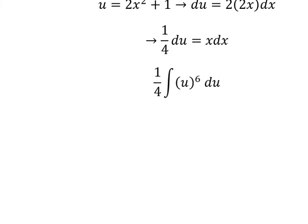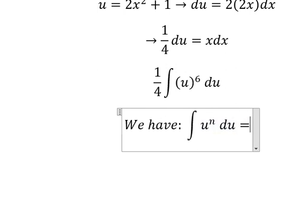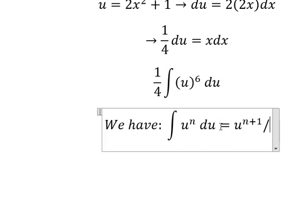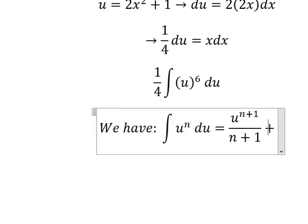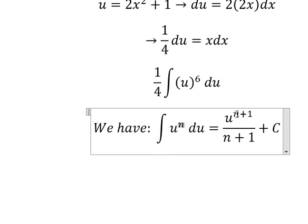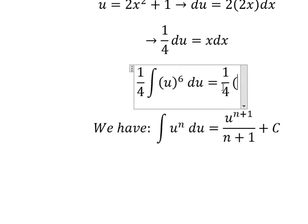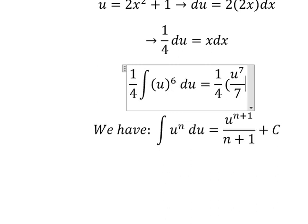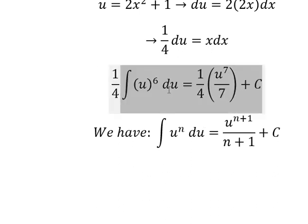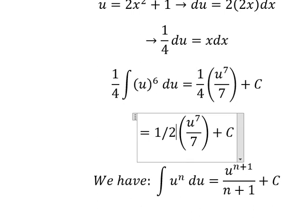Now we have the integral in u form. We use the power rule: integral of u^n du equals u^(n+1)/(n+1) + C. So with n = 6, we get u⁷/7. Multiplying by 1/4 gives us 1/28 times u⁷ plus C.